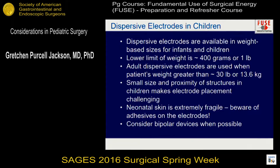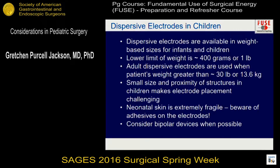Regarding dispersive electrodes — we don't use the same large BOVI pad used in adults. They are available in weight-based sizes for infants and children. The lower limit is about 400 grams, or about one pound. Adult-size electrodes can be used when the patient's weight exceeds about 30 pounds, or 13.5 kilograms.